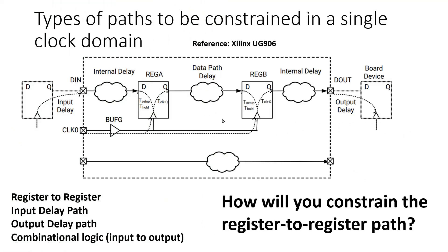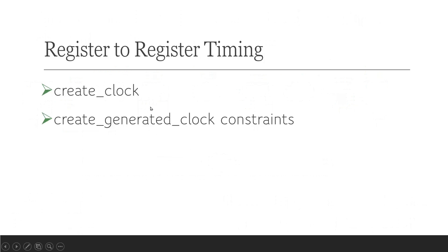In my previous video we discussed in detail the possible types of paths that exist in digital design in a single clock domain. We discussed four types of paths: register to register, input delay path, output delay path, and combinational logic from input to output. In the next video we discussed how to constrain the register-to-register path, and we explored two types of constraints: create clock and create generated clock constraints.